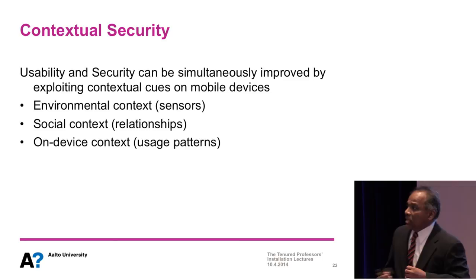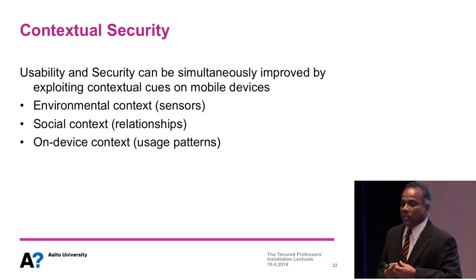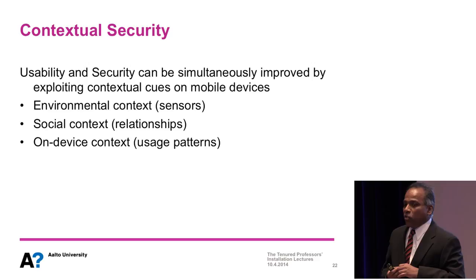This has started to be recognized: even those working against surveillance are trying to make secure systems more usable so ordinary people will actually use them. With that, I leave you with my thesis: usability and security can be simultaneously improved by making use of context information. My intent is to start from these baby steps and build a research program here. Thank you.